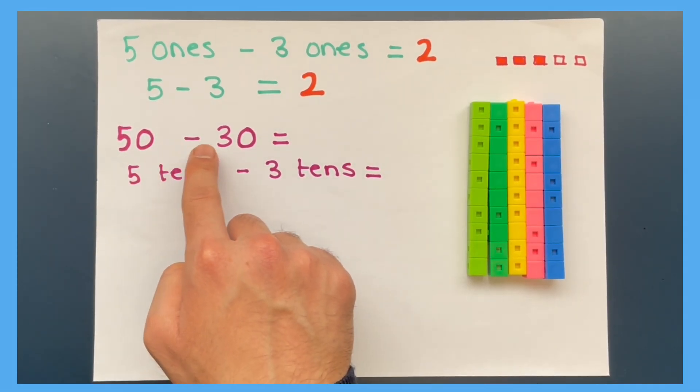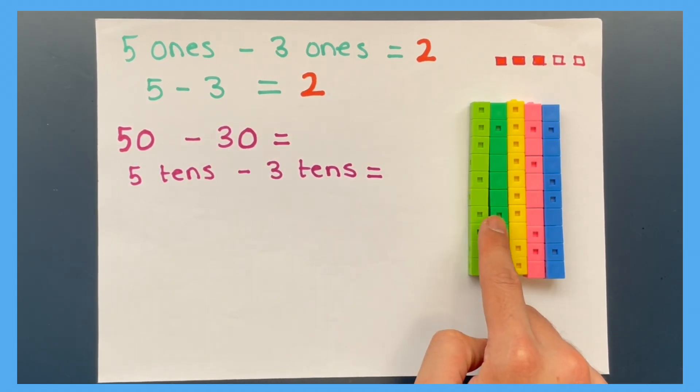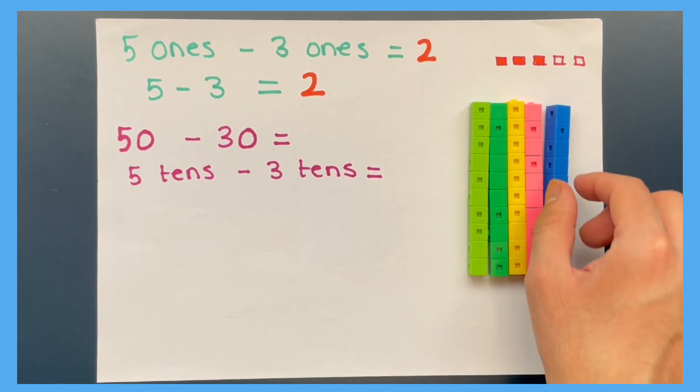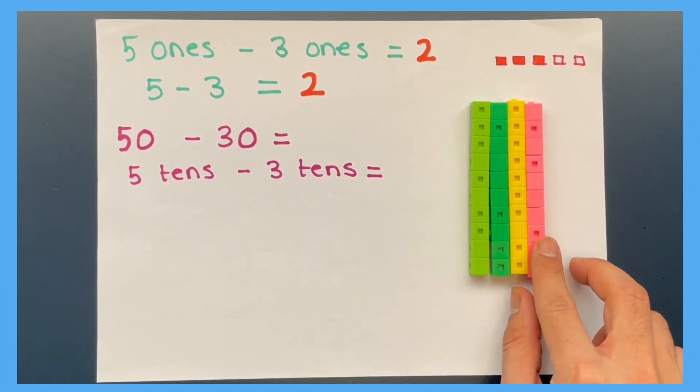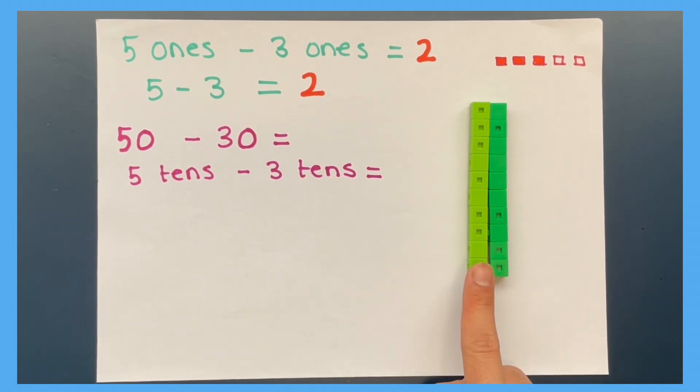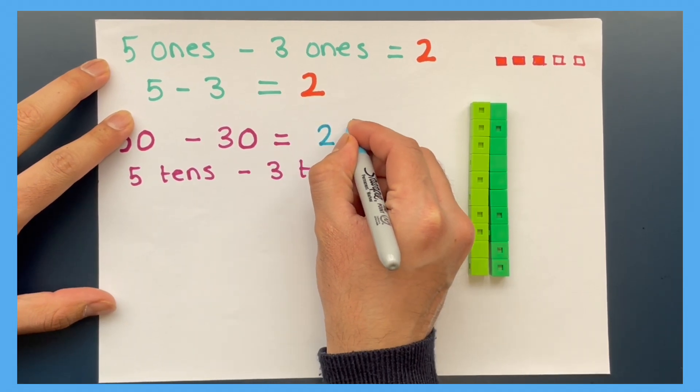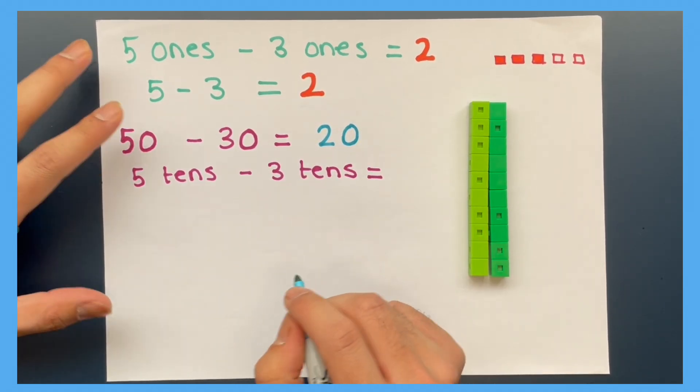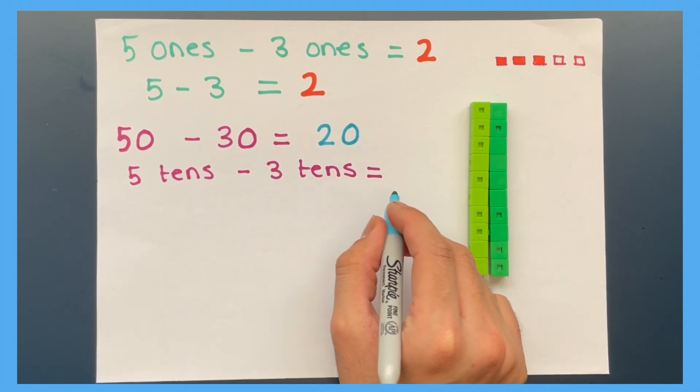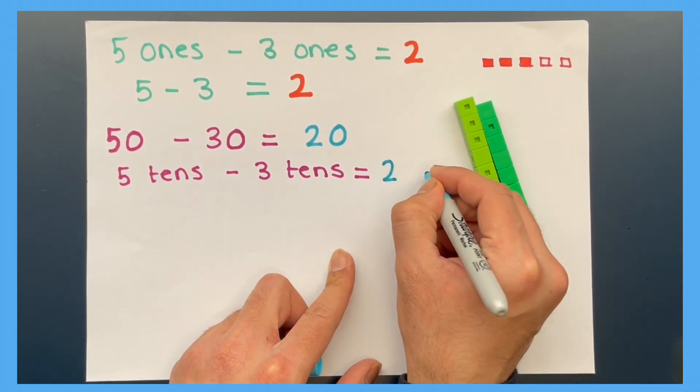Now we have fifty take away thirty equals. You have ten, twenty, thirty, forty, fifty take away ten, twenty, thirty. Remainder twenty. This is the same as five tens take away three tens equals two tens.